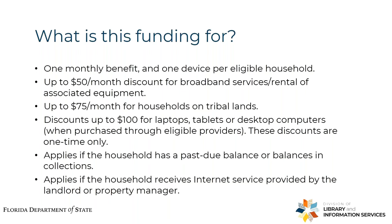What is the Emergency Broadband Benefit for? It funds one monthly benefit and one device per eligible household. That includes a $50 per month discount for broadband services or rental of any associated equipment — whether that's modems, routers, or anything used to get internet into an eligible household. That number increases to $75 per month for households on tribal lands, recognizing that the national health emergency has disproportionately affected those communities. There is also a one-time discount of up to $100 for a laptop, tablet, or desktop computer when purchased through eligible providers.